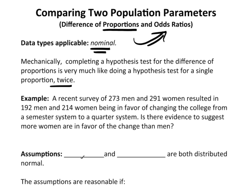Okay, so let's just jump into this one example. A recent survey of 273 men and 291 women resulted in 192 men and 214 women being in favor of changing the college from a semester system to a quarter system. Is there evidence to suggest more women are in favor of the change than men?